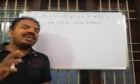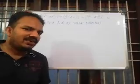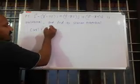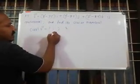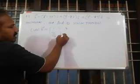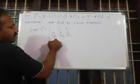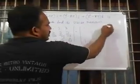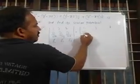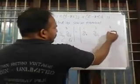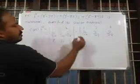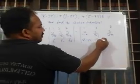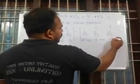The scalar potential: we set up the curl using the IJK determinant — dou/dou x, dou/dou y, dou/dou z — with components f1, f2, f3. Substituting, we have f1 = x² - yz, f2 = y² - xz, f3 = z² - xy.